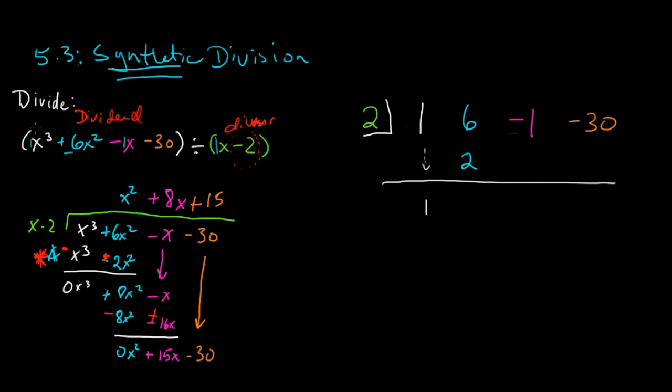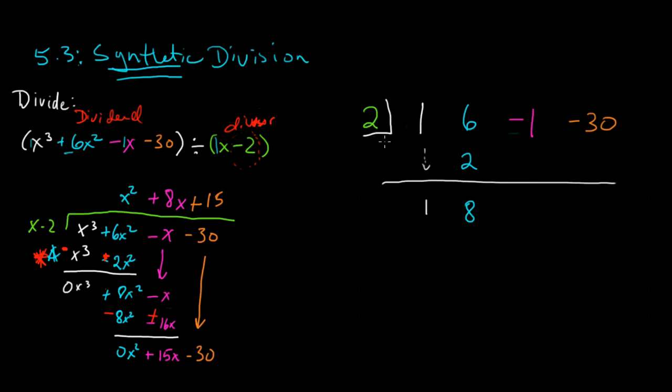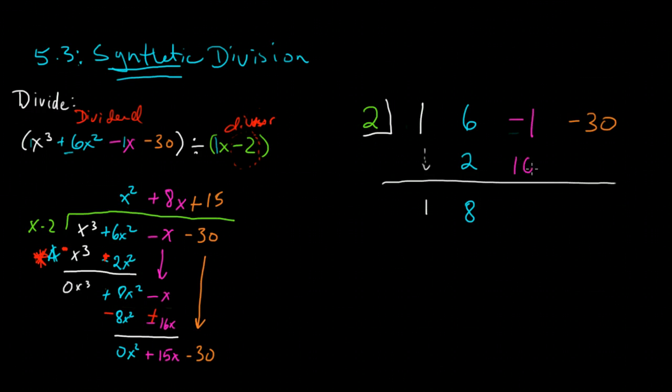And now we add those in because we've already built in the subtraction part. So 6 plus 2 is 8. We multiply 2 times 8, and we'll get a positive 16. And negative 1 plus 16 is a 15.